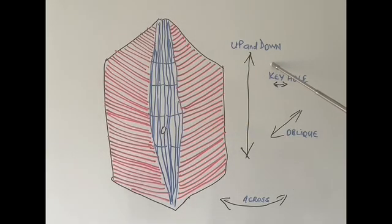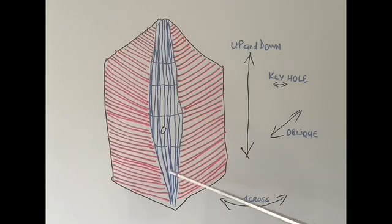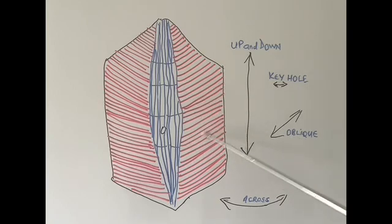Now this is how the incisions are made. If the surgeon is making an incision in the midline, then they will make an up and down incision. If they are making an incision on the side of the tummy, like for an appendix over here, then they will make an oblique incision which goes in the direction of the muscles.